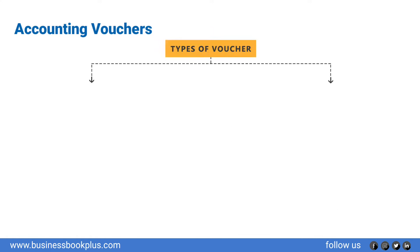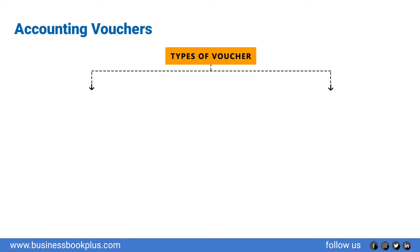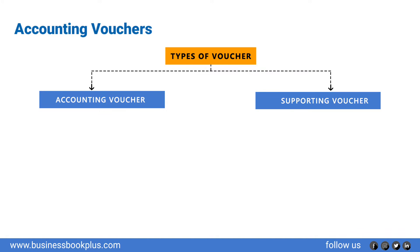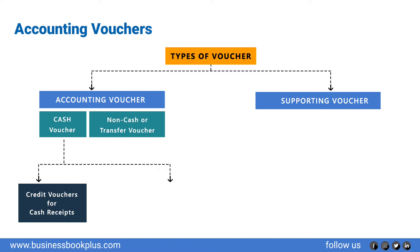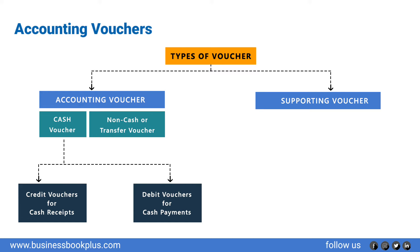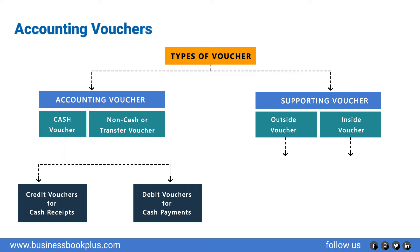There are two types of vouchers: accounting vouchers and supporting vouchers. Accounting vouchers are of two types: cash vouchers and non-cash vouchers. Cash vouchers include credit vouchers for cash receipt and debit vouchers for cash payments. Supporting vouchers also have two types: outside vouchers, which are prepared by third parties, and inside vouchers, which are prepared by the firm itself.